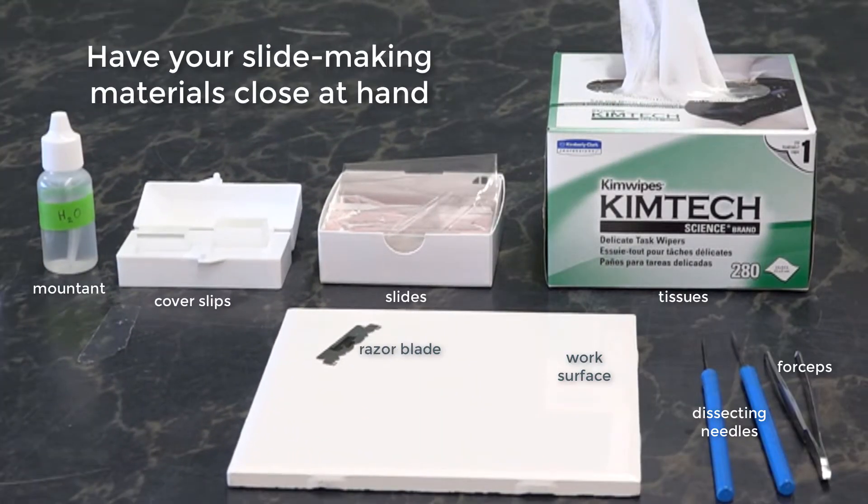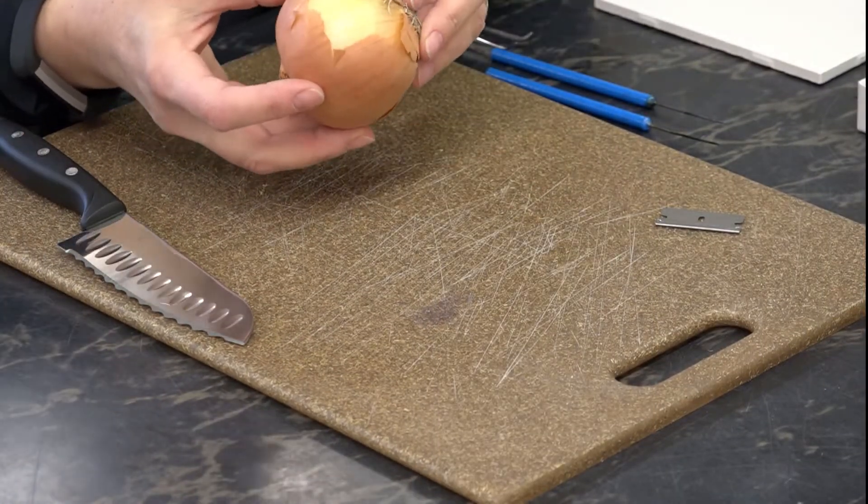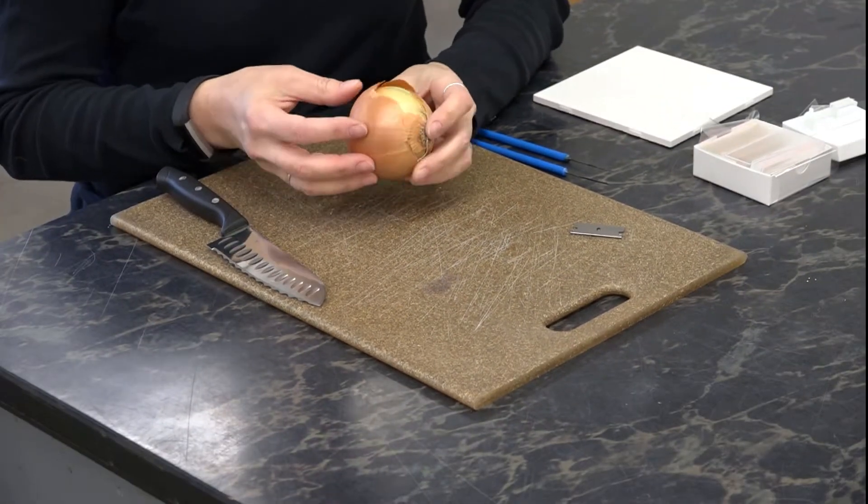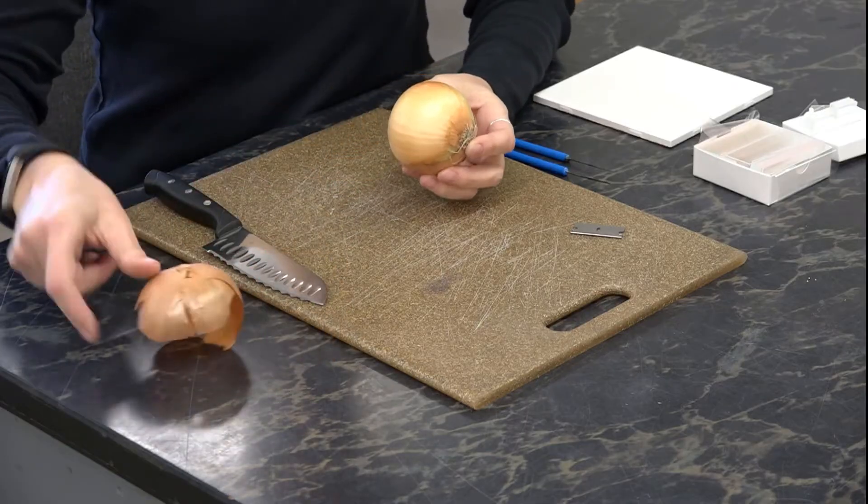Start with your slide-making materials close at hand. For the onion, we're going to want to use the modified scale leaves. You're not going to want to use the outer covering of the onion.